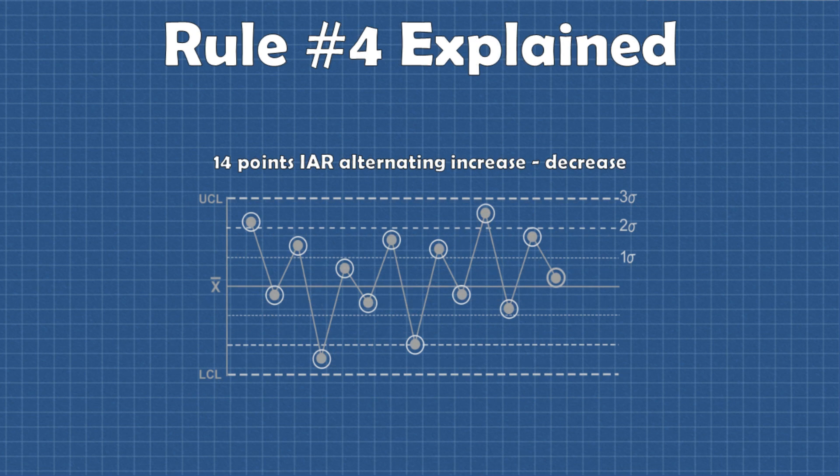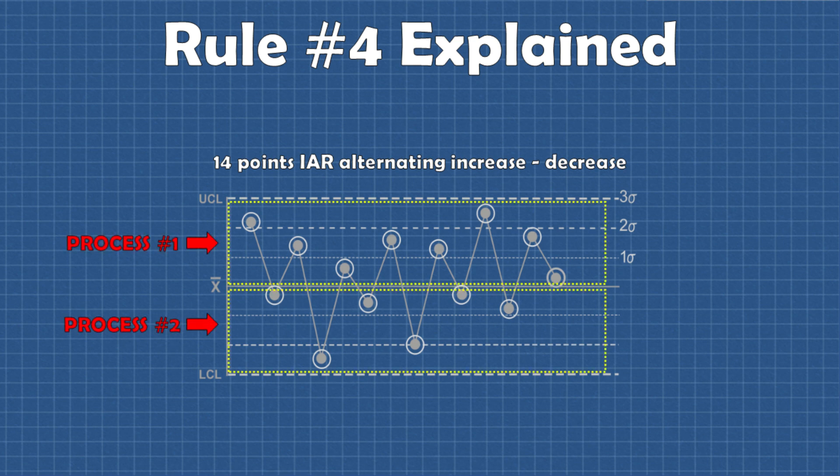Rule number four will detect a pattern that may indicate one of two things: a mixture or a systemic over-control. Mixture meaning a mix of two underlying processes in the same chart. For example samples are being taken from two different shifts or two molds in a die and plotted on that same chart.